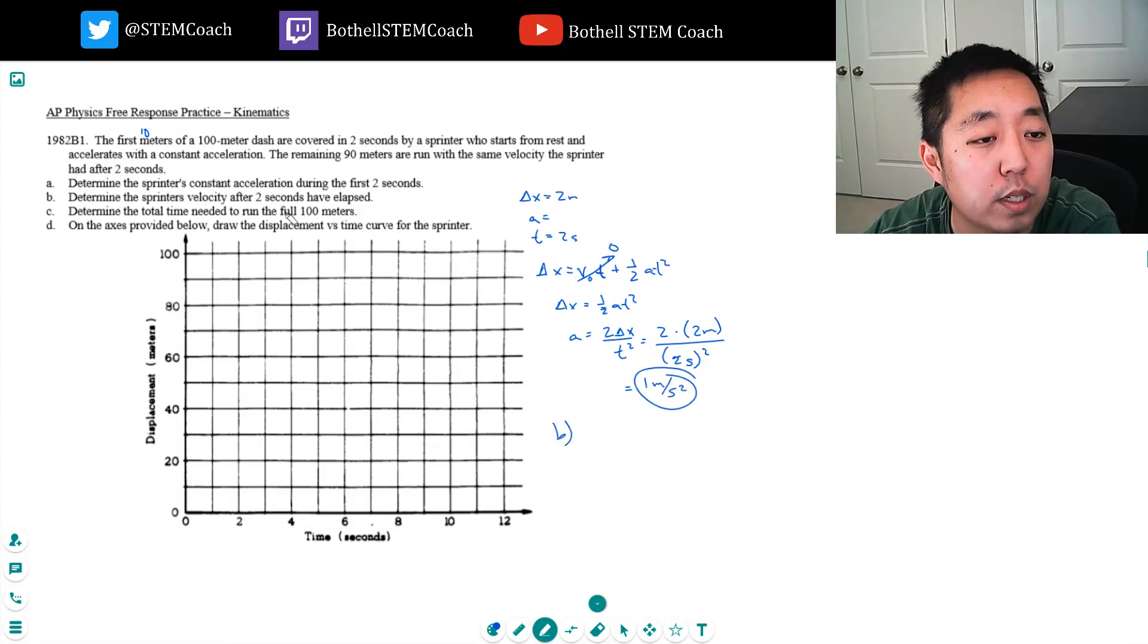Part B: Determine the sprinter's velocity after the two seconds have elapsed. So his final velocity equals his initial velocity plus acceleration times time. Now that I have acceleration and time, and I know his initial velocity is zero, it's just one meter per second squared times two seconds, so his velocity there is two meters per second.